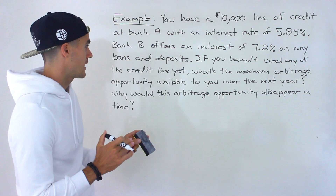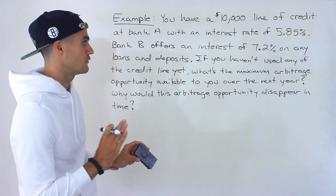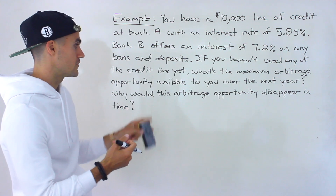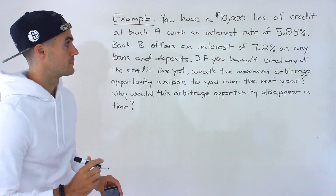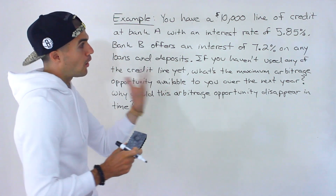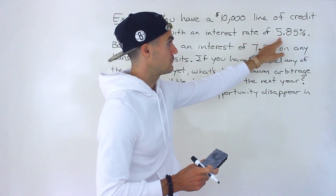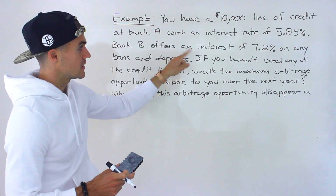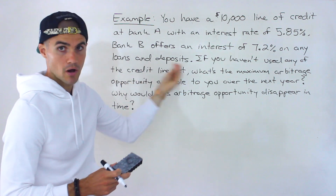If you haven't used any of the credit line yet, what's the maximum arbitrage opportunity available to you over the next year? And then why would this arbitrage opportunity disappear in time? Notice that you can borrow money — you have a line of credit with a $10,000 limit at 5.85%, but there's another bank that offers 7.2% on any loans or deposits.